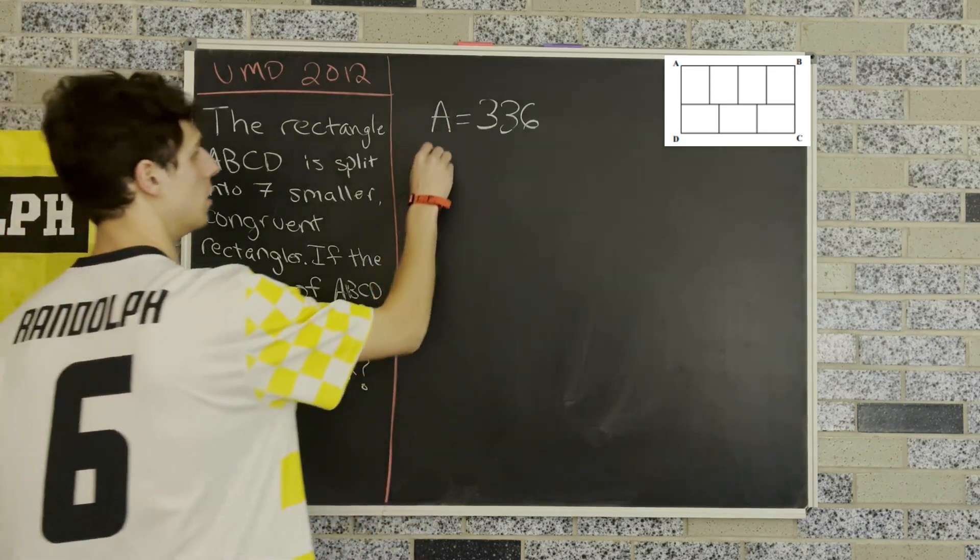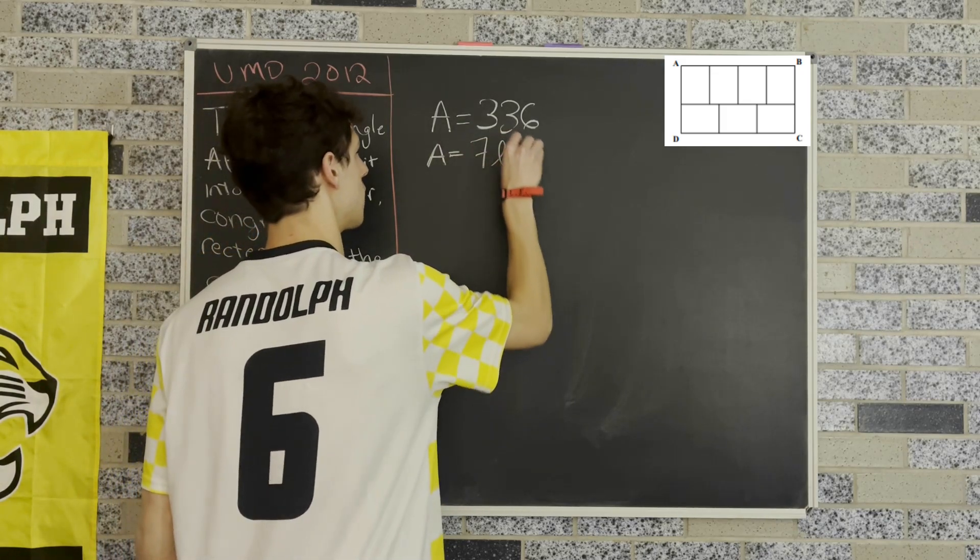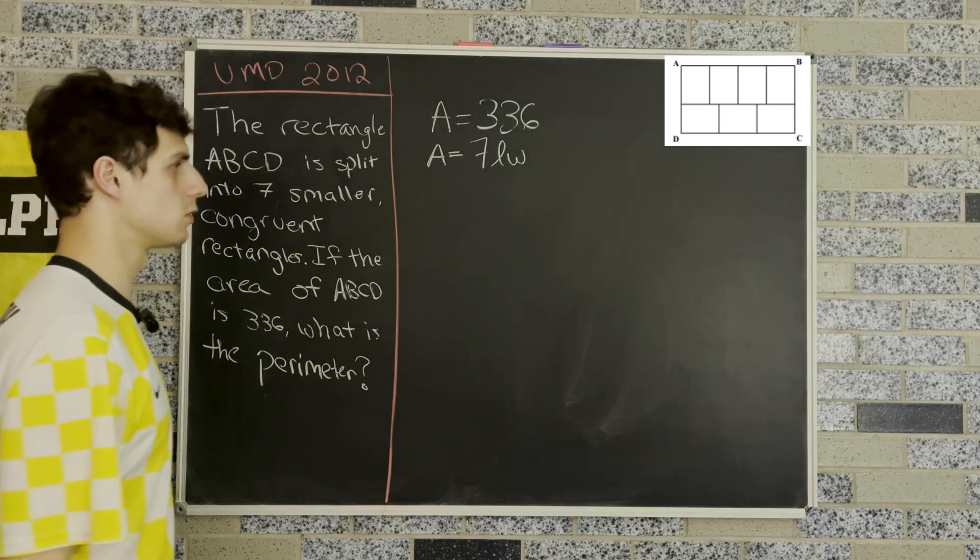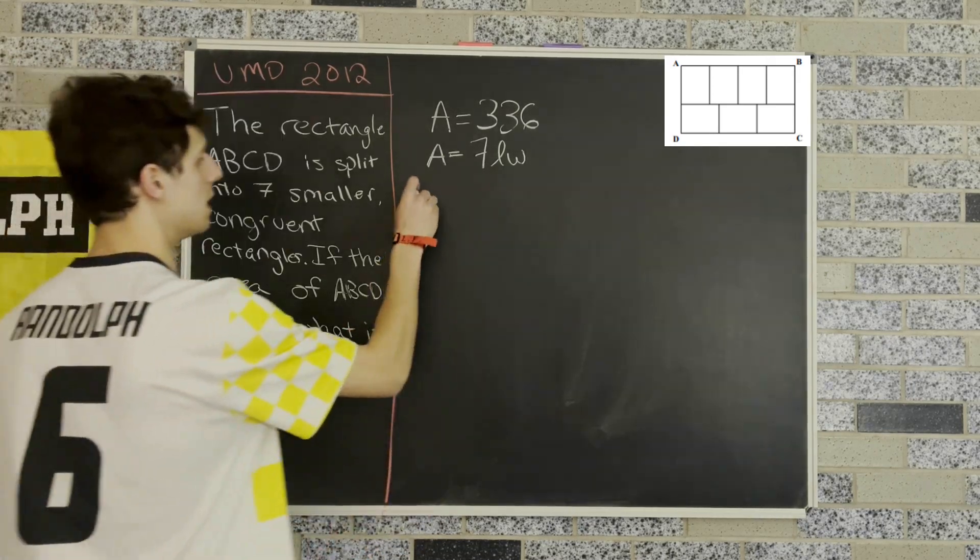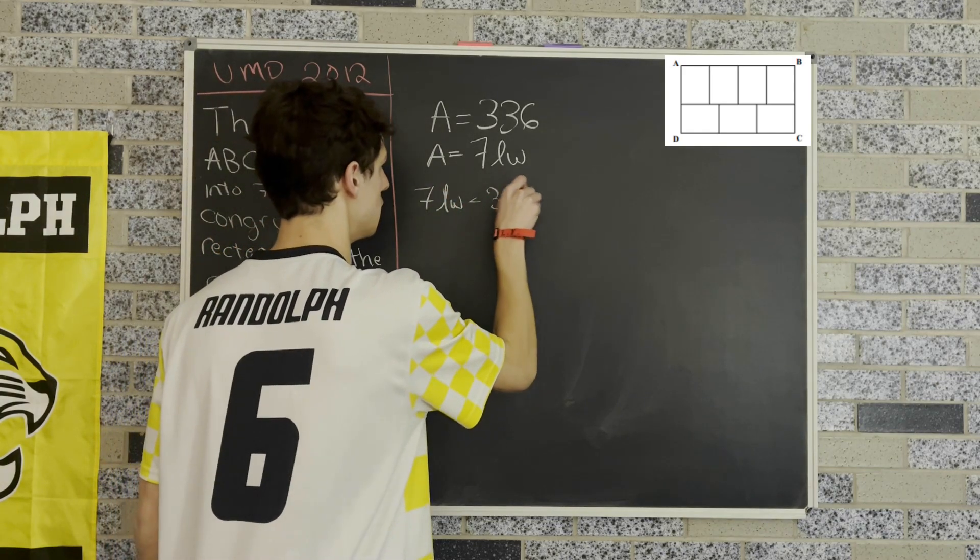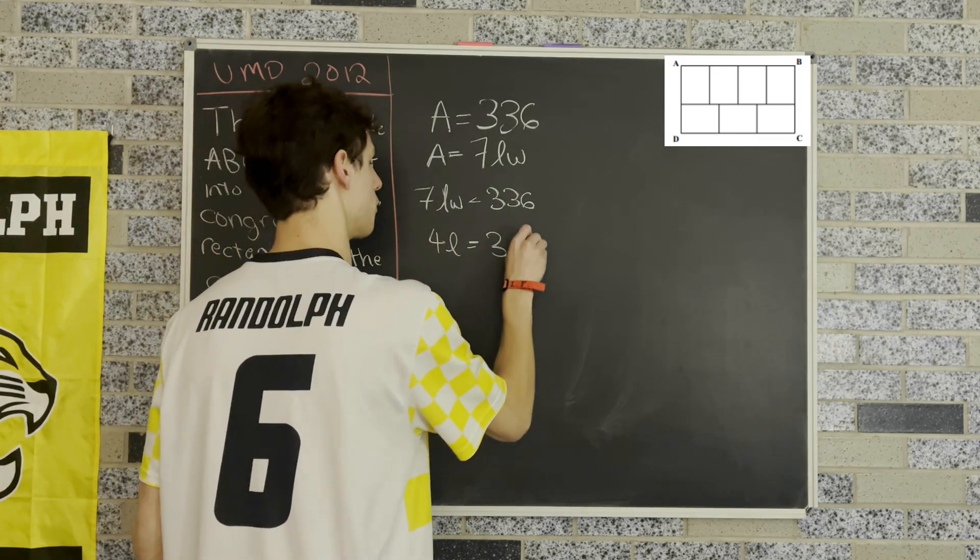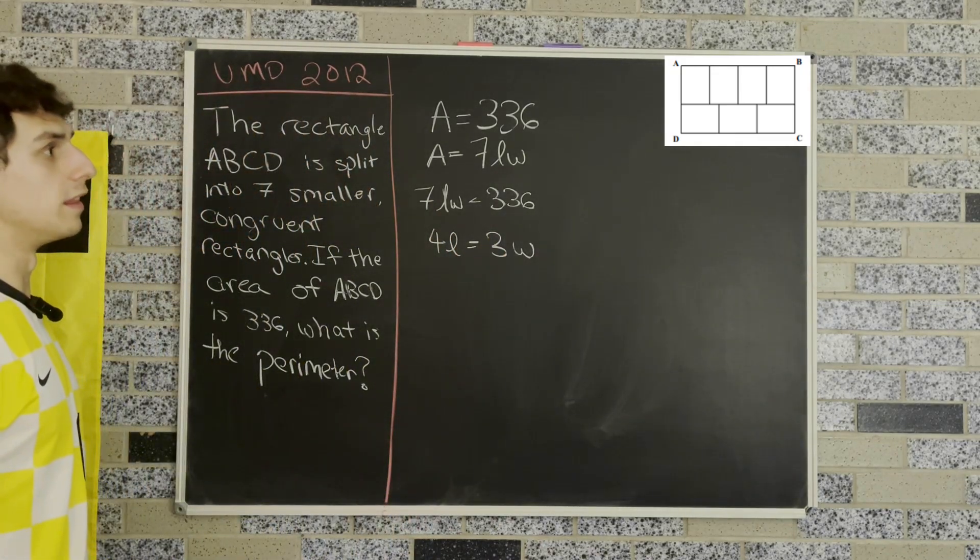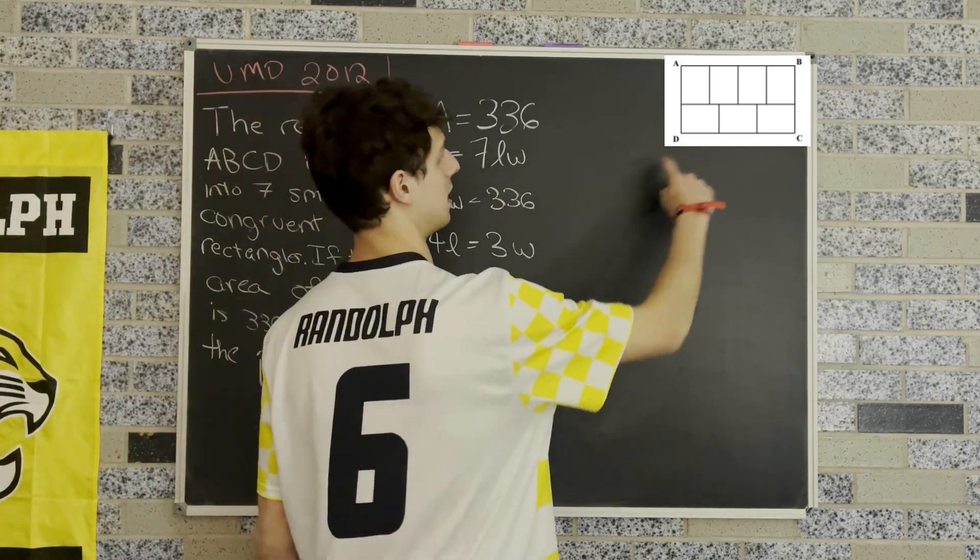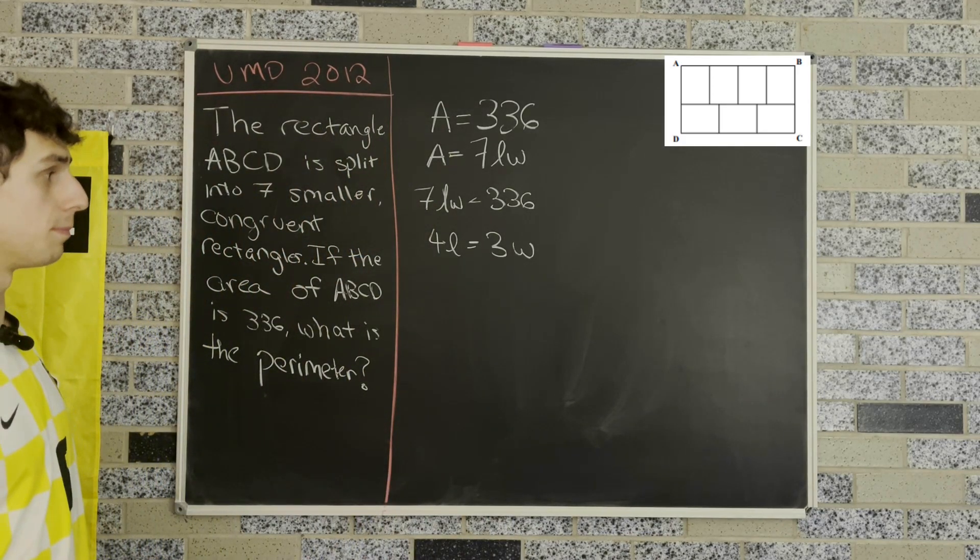We also know that the area of that rectangle is seven times length times width. We'll say the length is the shorter end of those congruent rectangles and the width is the longer end. That means seven times length times width equals 336. We also know that four length equals three width from the top and bottom of that rectangle. We have four length segments across the top and three width segments across the bottom.